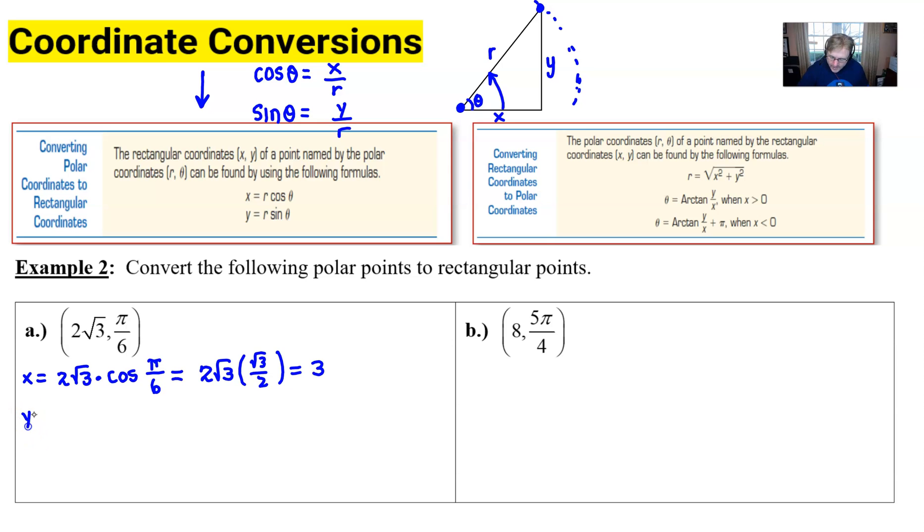If we do the same thing for y except use r times the sine of theta we find ourselves with 2√3 times the sine of π/6. Again you'll finish this up by using your trigonometry knowledge and you would hopefully know that the sine of π/6 is 1/2 which here is going to cause the 2's to cancel and we would just get the √3. So the polar coordinate 2√3, π/6 is the same as the rectangular coordinate 3, √3.